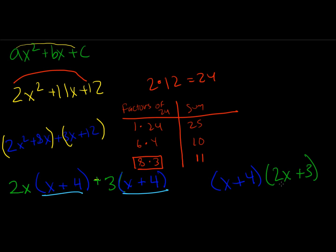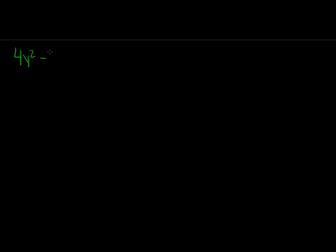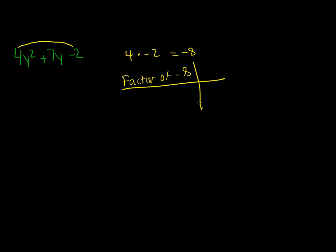Now let's look at factoring ax squared plus bx plus c when c is negative. Our example is 4y squared plus 7y minus 2. We start by multiplying a times c: 4 times negative 2 gives us negative 8. Now we find factors of negative 8 that add up to positive 7. We look at negative 1 and positive 8: negative 1 times 8 equals negative 8, and when we add them we get 7, so those are our factors.